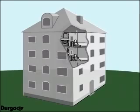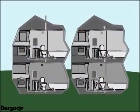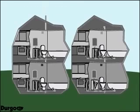In test one, two pipes were installed on the main stack in two separate test houses. Test house number one was vented to the open atmosphere. Test house number two was equipped with the Durgo air admittance valve. Technicians started fires on the first floor of each house.